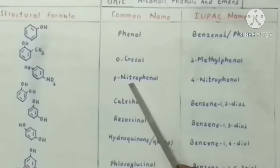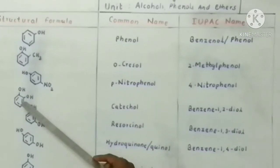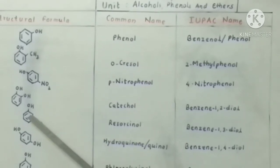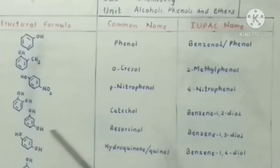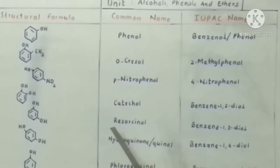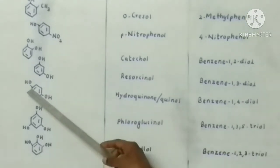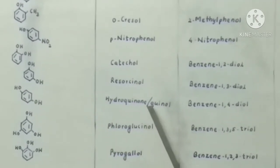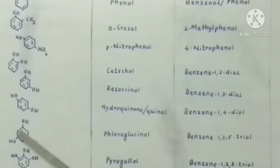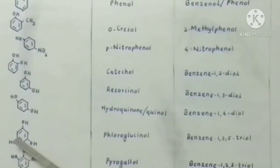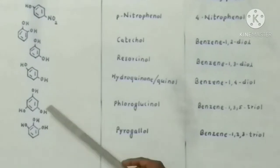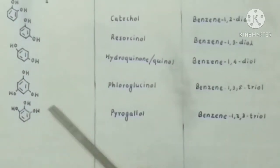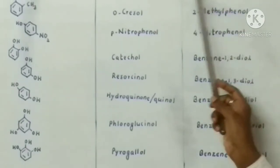Next, the OH group is attached to the first carbon atom and a nitro group to the fourth carbon atom (positions 1, 2, 3, 4), so its common name is para-nitrophenol. Then the structure with two adjacent OH groups has the common name catechol. The structure with OH groups at first and third positions is resorcinol. The structure with OH at first and fourth positions is hydroquinol or quinol. Finally, three hydroxyl groups attached to the benzene ring gives phloroglucinol, and another arrangement gives pyrogallol.